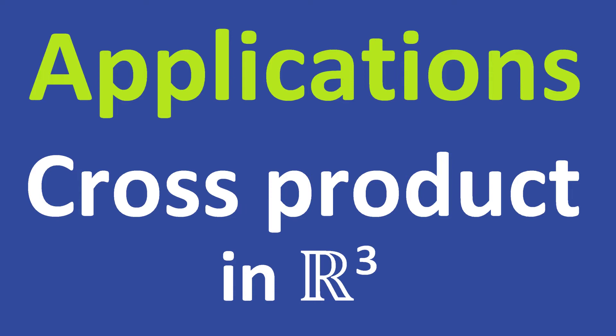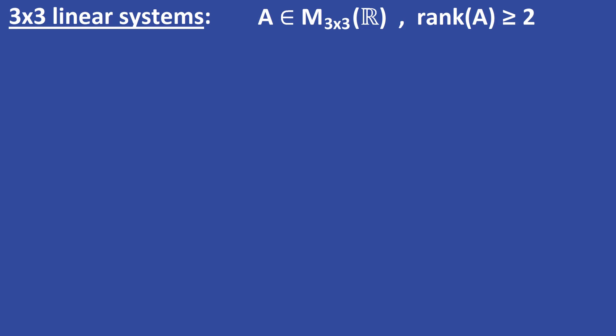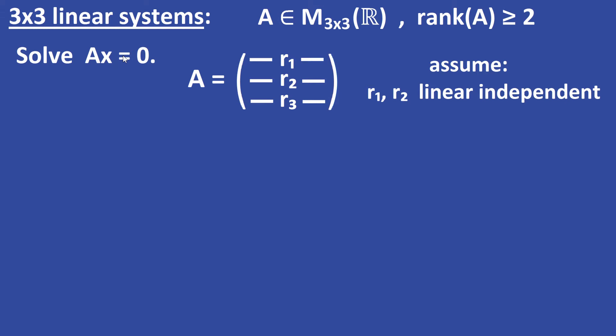We will start with the solution of easy linear systems. Let A be a 3x3 matrix with real entries. The rank of the matrix A has to be greater than or equal to 2, meaning the matrix A has at least two linearly independent rows. Now we consider the following homogeneous linear system: Ax is equal to 0.